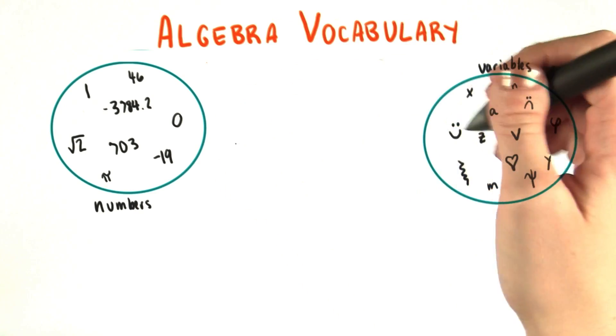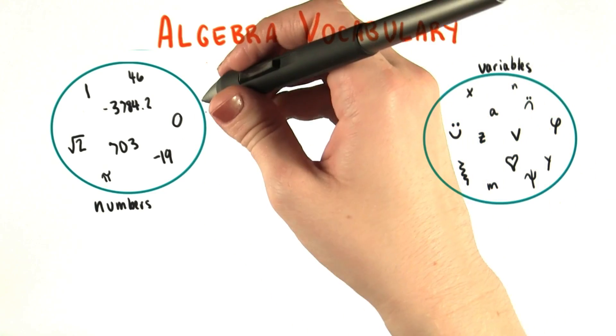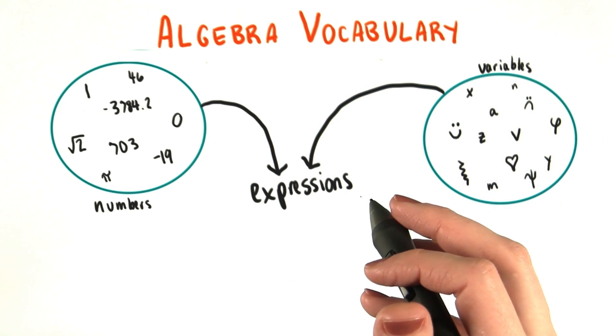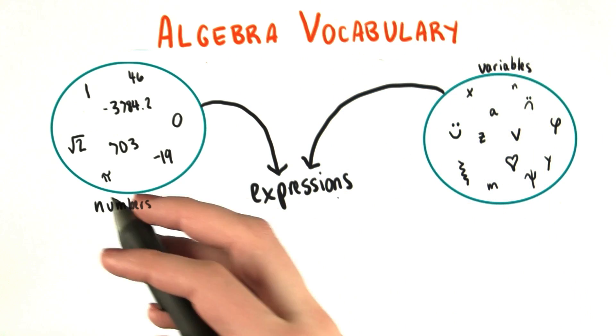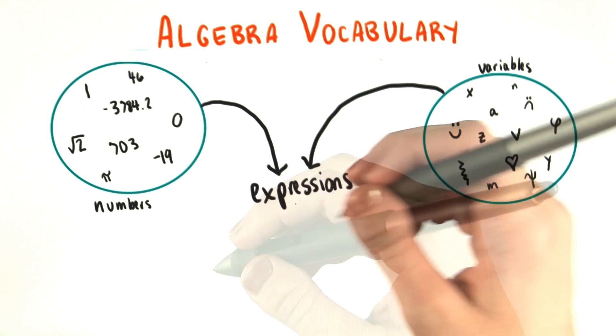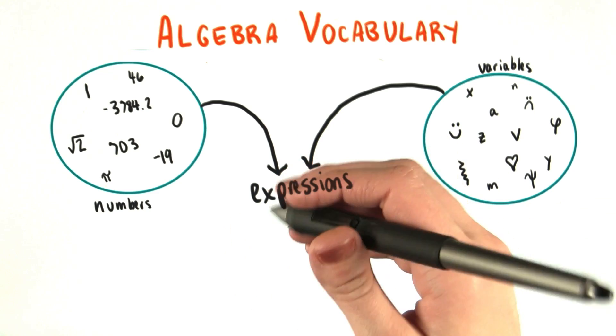Now, as I mentioned earlier, variables and numbers can be combined. And when we do this, we create expressions. An expression is what you get anytime you put numbers and variables together with mathematical operators. So those are things like plus, minus, divide and multiply.